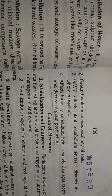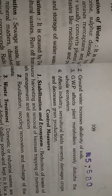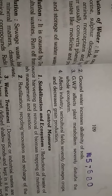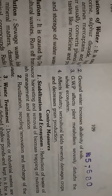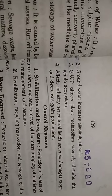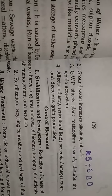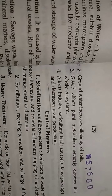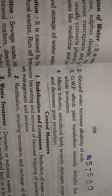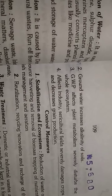Polluted groundwater increases the alkalinity of soils, and this affects metabolism — it severely disturbs the whole ecosystem. Once water gets affected, the entire ecosystem is also affected.